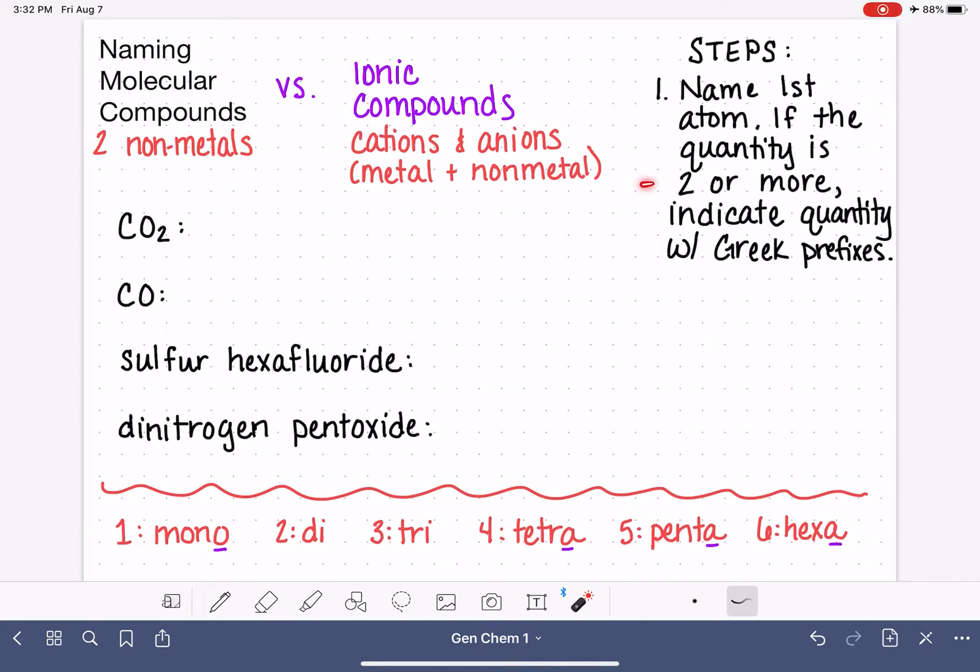Now, we only have to do that if we have two or more of the first atom. In this molecule, which we're starting with right here, we only have one of that first atom. So that means that we just say carbon. We don't have to change the ending. We don't have to indicate how many we have. It's just carbon.